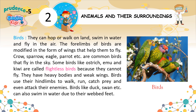Some birds like ostrich, emu, and kiwi are called flightless birds because they cannot fly — they have heavy bodies and weak wings. Birds use their hind limbs to walk, run, catch prey, and even attack their enemies. Birds like duck and swan can also swim in water due to their webbed feet.